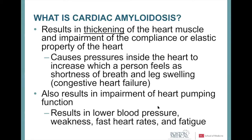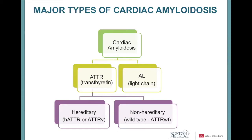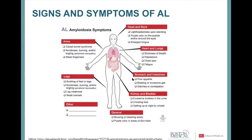Heart pumping function is also impaired with amyloidosis — initially subtly, then much more significantly in later stages — causing reduced ejection fraction, lower blood pressure, weakness, faster heart rates, fatigue, and poor exercise tolerance. Cardiac amyloidosis is divided into two major types: AL (amyloid light chain), where the light chain misfolds; and TTR (transthyretin), which is subdivided into wild-type (non-hereditary) and hereditary forms. Today's focus is on AL amyloidosis.